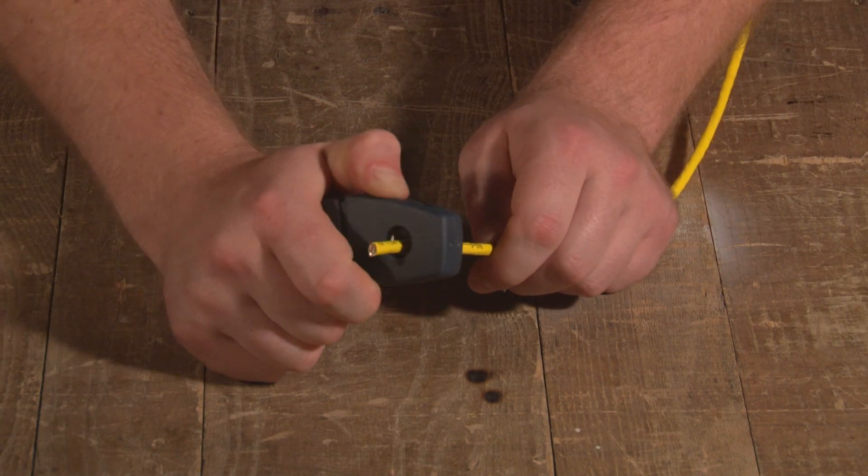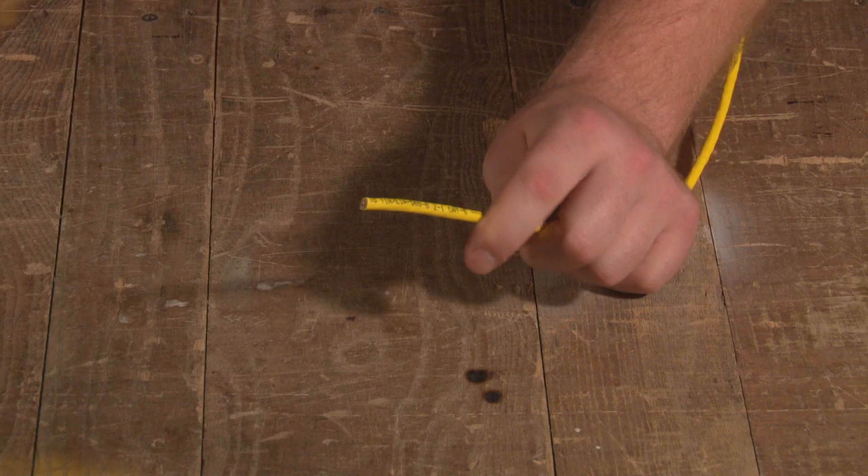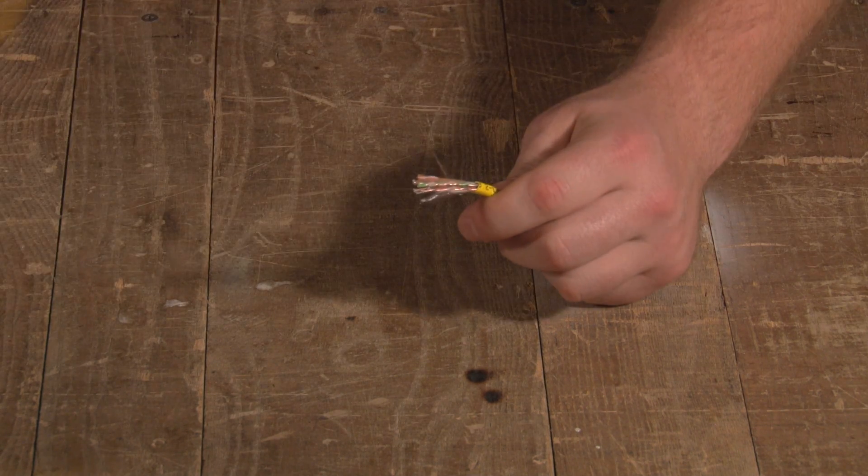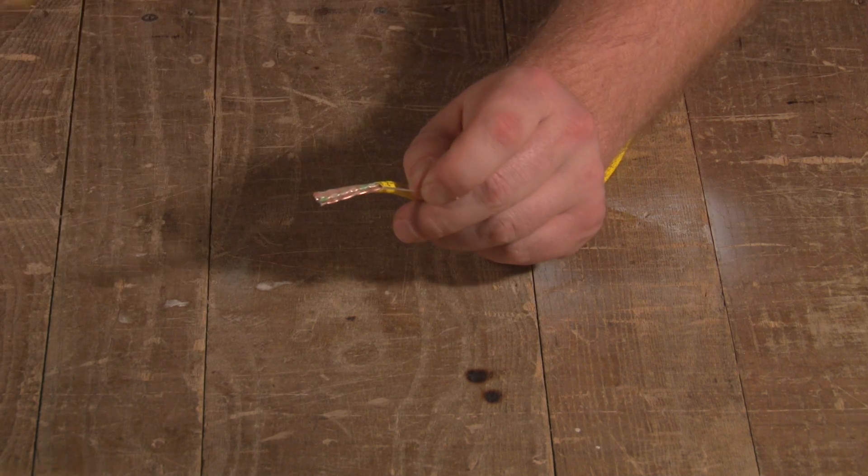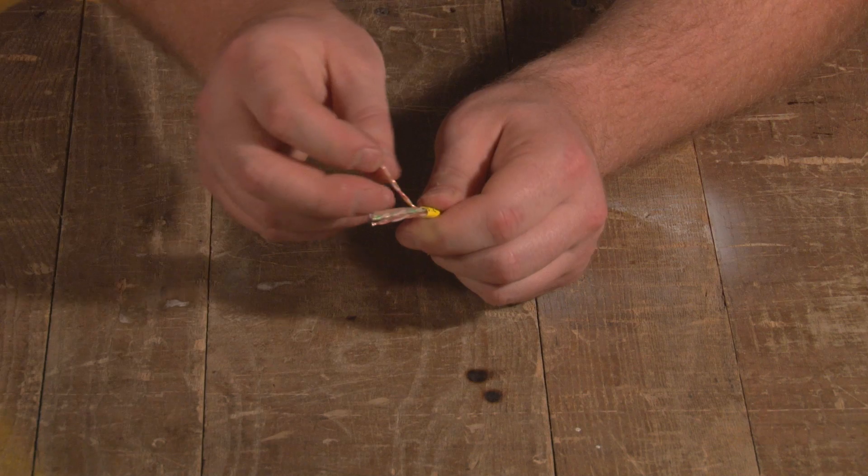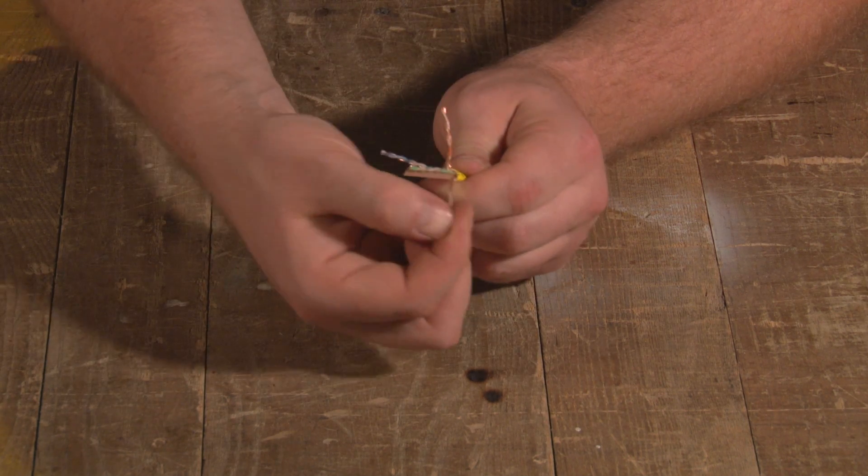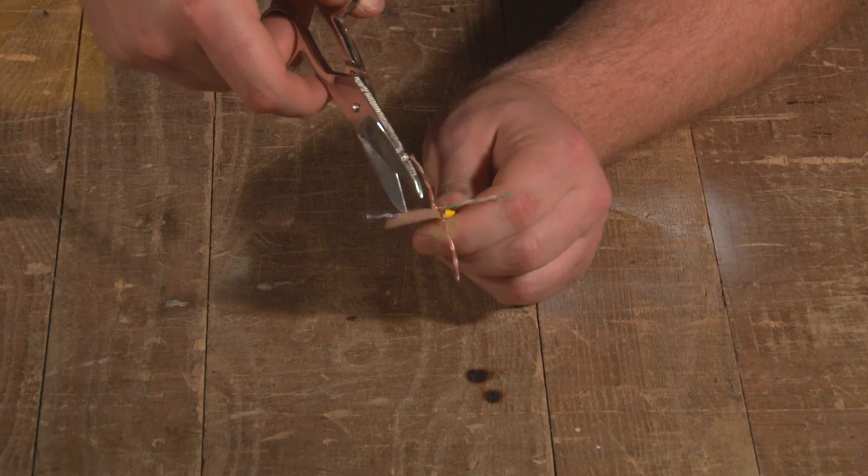Strip the plastic jacket, being careful not to cut into the wires. Cut the thread. Pull apart the twisted pairs. Cut the plastic inner guide.